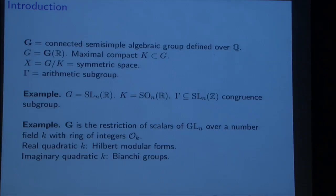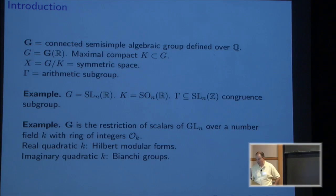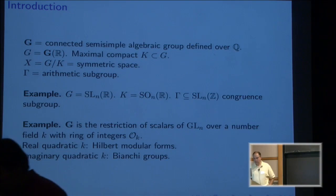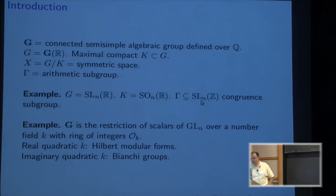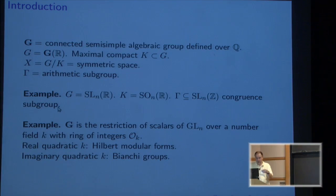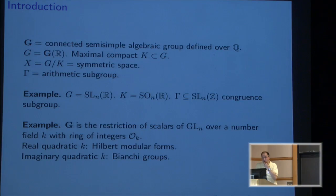A standard opening, I suppose, for this conference. Let G be a connected, semi-simple algebraic group defined over Q. G is its real points. Choose a maximal compact subgroup K. So X, G mod K is the symmetric space, and let gamma be an arithmetic subgroup of G. The main example for this talk will be G is SL(N,R). G is SL(N,R), K is SO(N,R), and gamma will be one of the standard congruence subgroups.